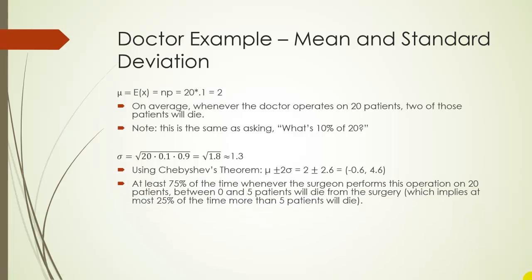So, in other words, we expect at least 75% of the time when a surgeon performs his operation on 20 patients, between 0 and 5 patients will die from the surgery, which implies that at most, 25% of the time, more than 5 patients will die. So, in other words, if a surgeon regularly has 6 or 7 patients dying, then they're underperforming. They're not doing well.